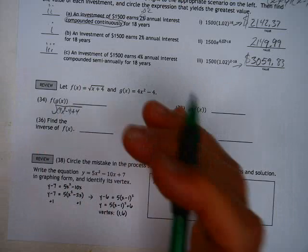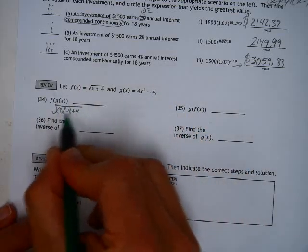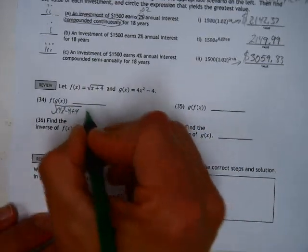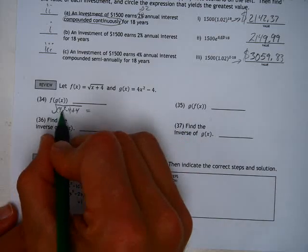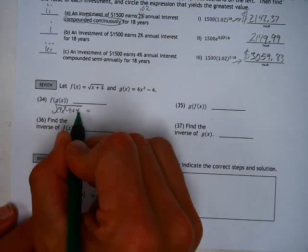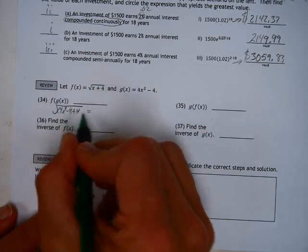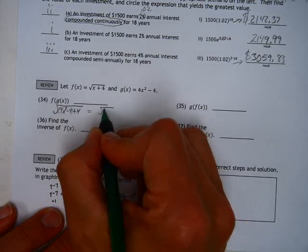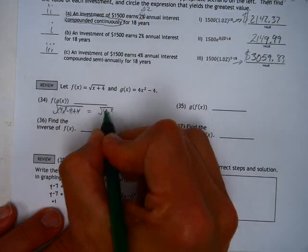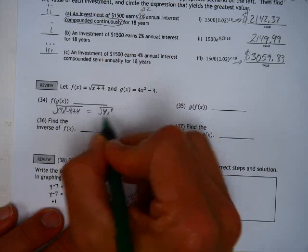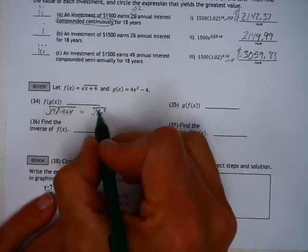Now, the parentheses are there to show your location. That doesn't mean automatically multiply because you see a set of parentheses. Keep in mind, this is just a 4x squared minus 4 and then plus 4. So minus 4 plus 4, those guys go away. You're left with the square root of 4x squared, which happens to be a perfect square.